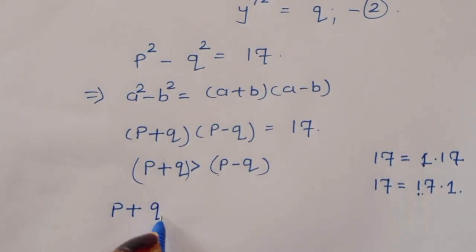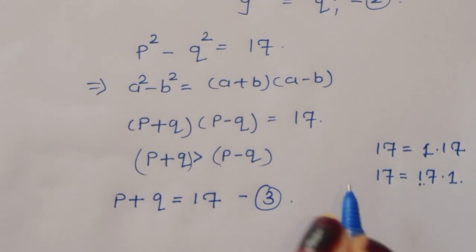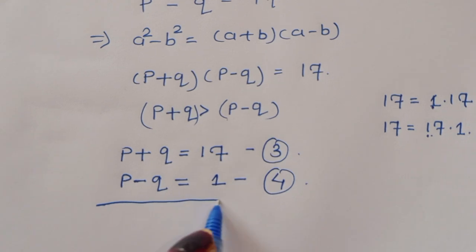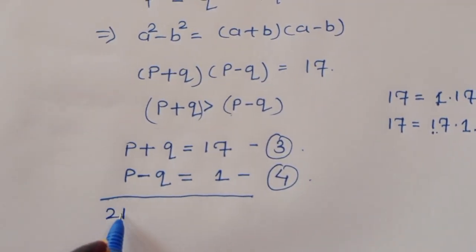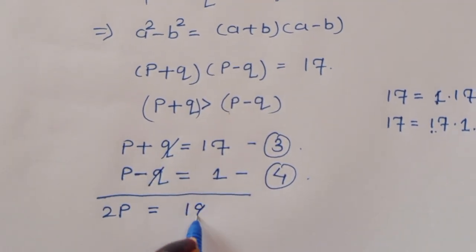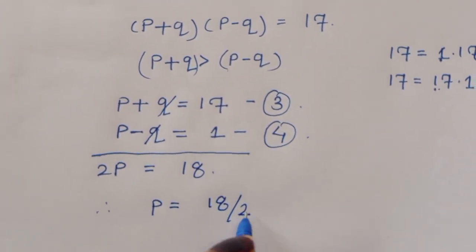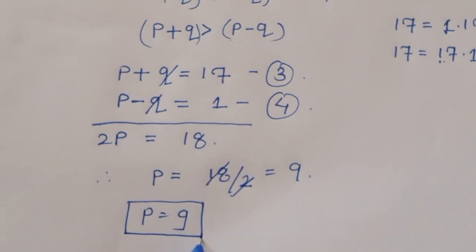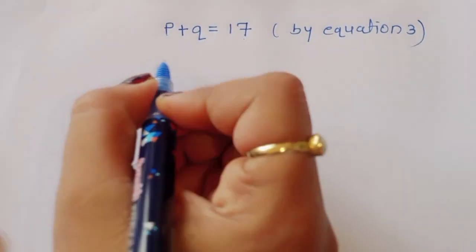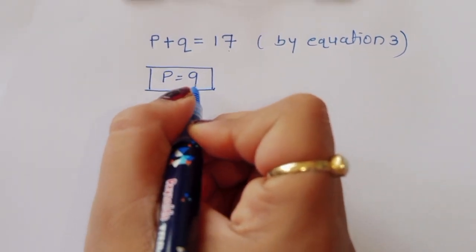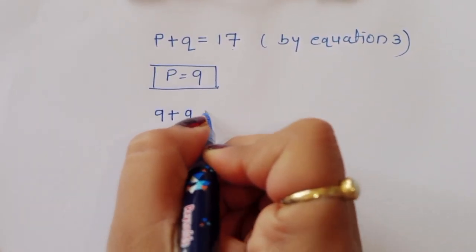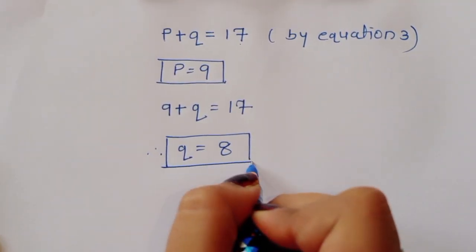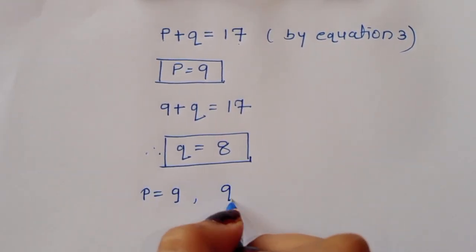So we write equation 3: p plus q is equal to 17, and equation 4: p minus q is equal to 1. Adding these two equations, 2p equals 18, therefore p is equal to 9. Substituting p equals 9 into equation 3: 9 plus q equals 17, so q equals 17 minus 9, which is 8. We now have p equal to 9 and q equal to 8.